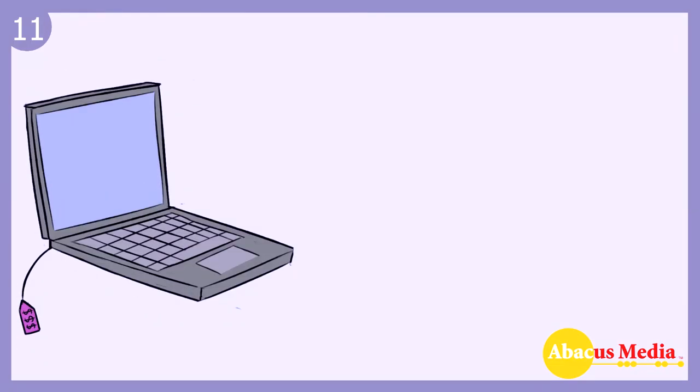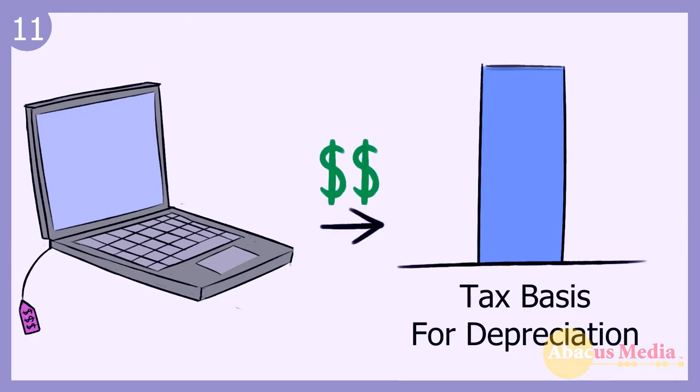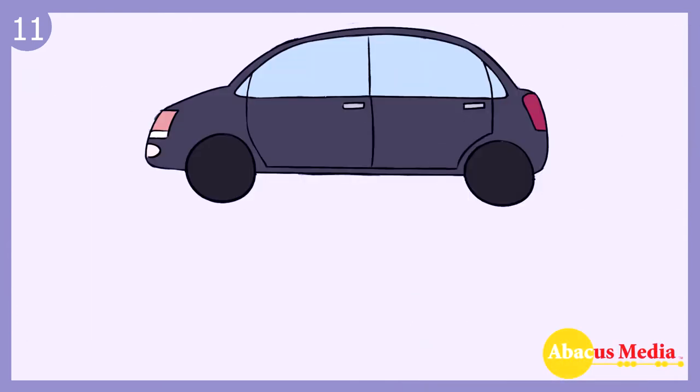Number eleven: You can elect to expense a certain amount of equipment costs within the year purchased. Any amount you expense reduces your tax basis for depreciation. The expensing election applies to the purchase of a car too, but with certain dollar limits and only if you use the actual cost method for car expenses.